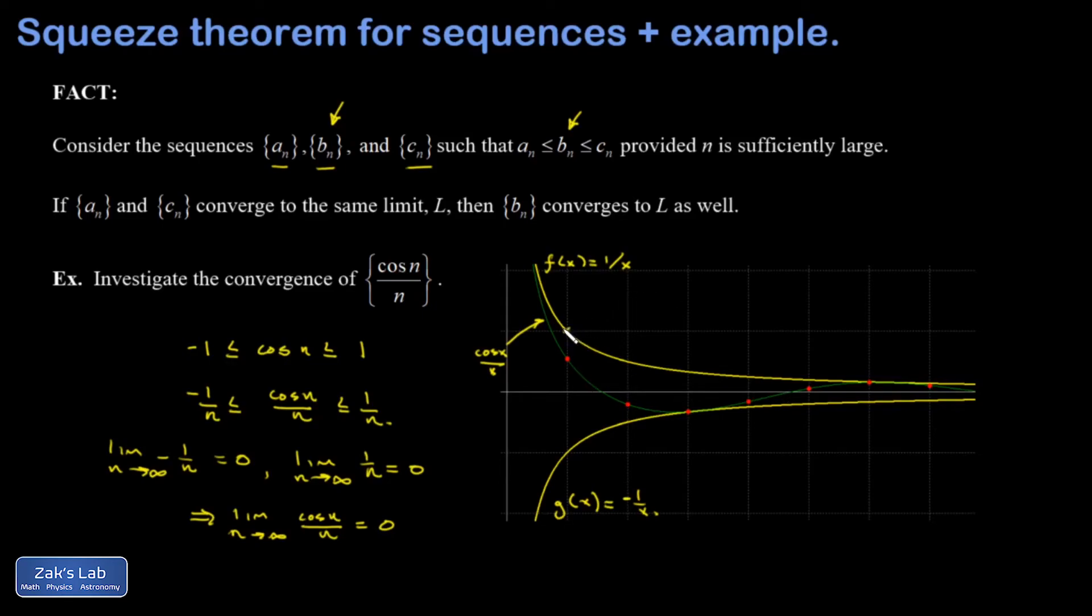If I look at N equals one, my upper bounding sequence is above that, and my lower bounding sequence is below it. At N equals two, similar, right? These cosine N over N terms are always trapped between these two. I can see this almost getting to being exactly equal at N equals three, and that's because the cosine function is extremely close to its minimum value because three is very close to pi, where the cosine is very close to negative one.